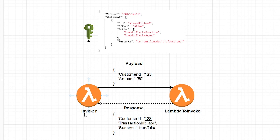Associated with this initial Lambda function that's going to do the calling is an IAM role, and this IAM role has two major policies. The first one is just the Lambda basic execution role, which you need on all Lambda functions. The second one covers two actions: the Lambda invoke function action and the Lambda invoke async action. Invoke function is for synchronous, invoke async is for asynchronous. Here we're specifying a global permission for any Lambda function, but you can scope it to a specific function. I'll keep this global for simplicity.